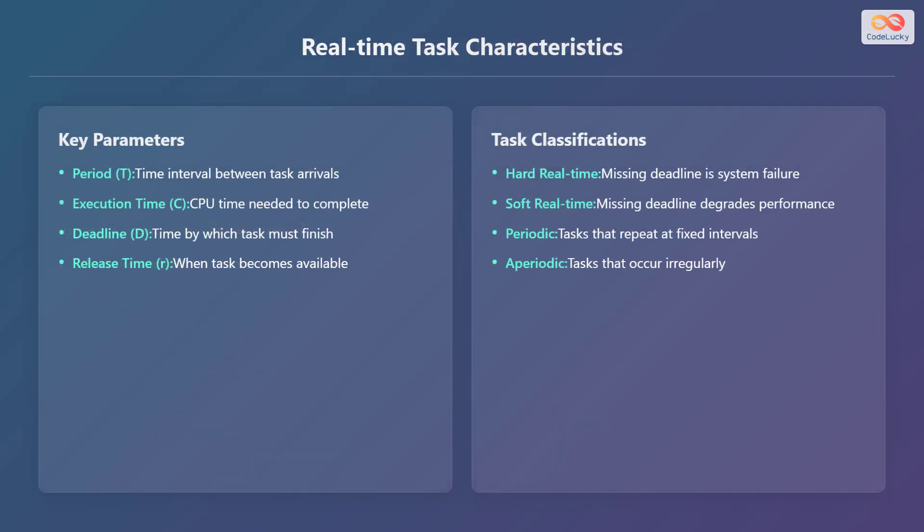Let's look at some key parameters. First, the period denoted as T, which is the time interval between task arrivals. Next, the execution time denoted as C, which is the CPU time needed to complete the task.